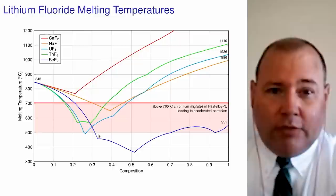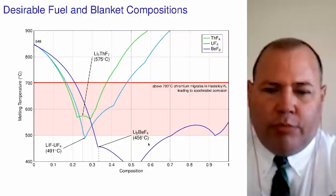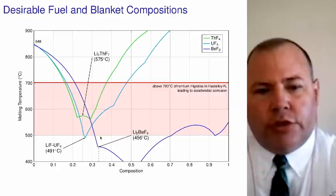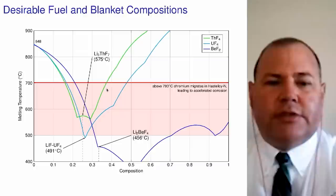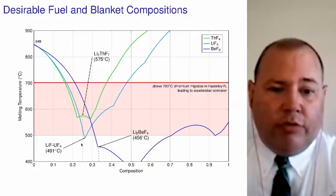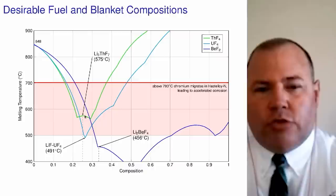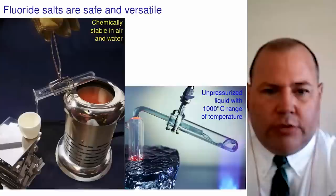Zooming in on this graph, the melt temperature for a two-thirds/one-third combination of lithium fluoride beryllium fluoride is around 456°C. That gives us 50°C of melt margin as well as 150°C of delta-T needed for our power conversion system, while still staying below the 700°C threshold I'll discuss in a moment. There are other mixtures that get below that too — lithium fluoride/uranium fluoride has a potential mixture, and a three-to-one mixture of lithium and thorium has a lower melting temperature, though not as much range as you'd want.